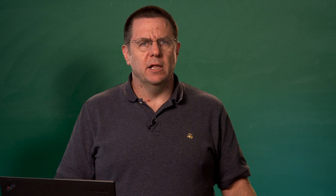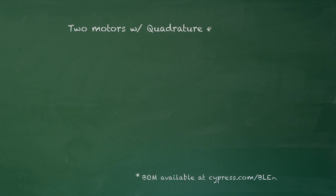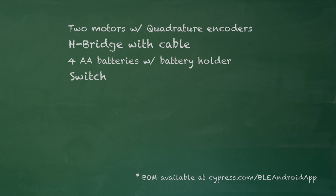while the other link includes everything except for the BLE kit. The electrical components include two motors with quadrature encoders, a dual H-bridge, a cable to connect the H-bridge to the PSOC, a battery holder,